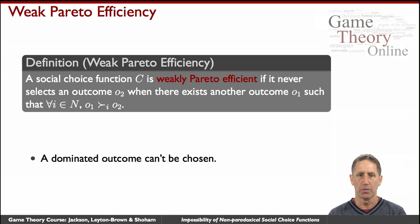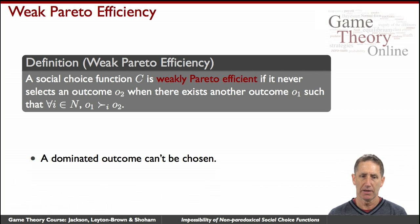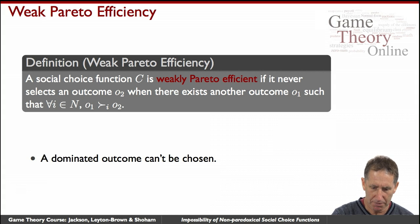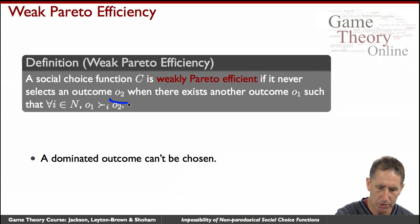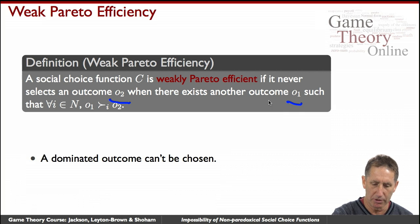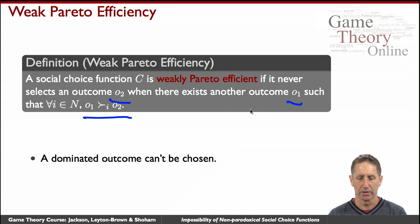Let's first define weak Pareto efficiency. We'll say that a social choice function C is weakly Pareto efficient if it never elects a dominated outcome or candidate. So if there is a candidate O2 such that some other candidate O1 is always preferred to O2 by every voter, then the weaker candidate O2 would never be elected. This seems like a reasonable criterion.